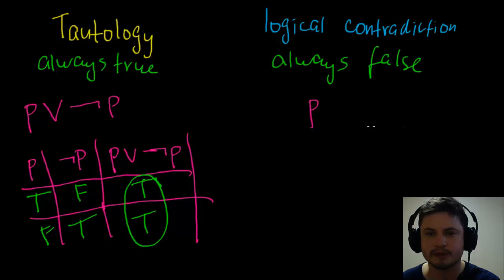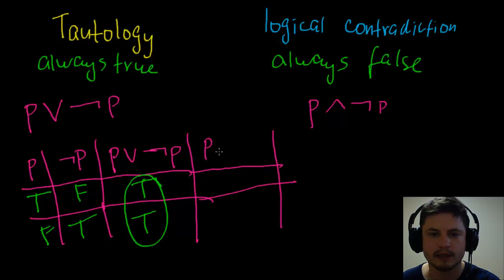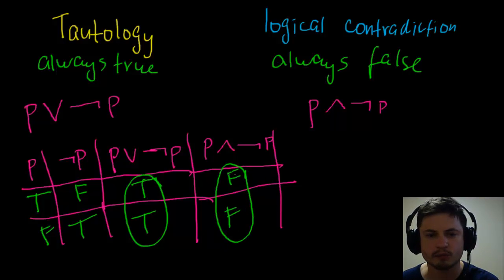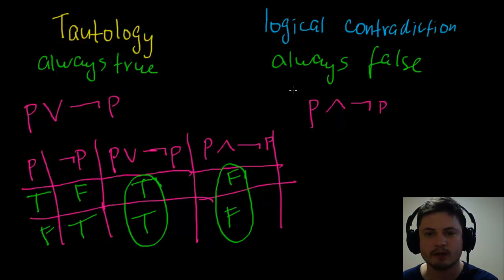Contradiction is the opposite of tautology. A good example is p and not p (p ∧ ¬p). You can never have a proposition and its opposite both be true at the same time, so this is always false — it's always a contradiction. Remember: tautology means always true, logical contradiction means always false. That's it for Chapter 8.2 on compound propositions — thanks for watching and good luck!